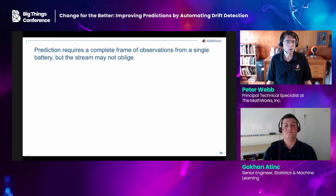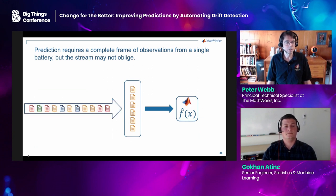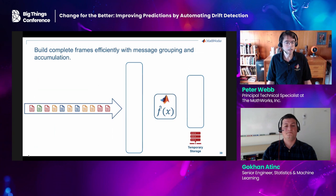Recall what Gokhan told you about feature extraction — it's accurate only if the frame contains a minimum number of messages, all from the same battery. But since multiple buses send data to the stream simultaneously and independently, messages in the stream seldom present themselves in suitable blocks. There are two problems here: not enough data from a single battery to fill up the frame — four in the stream, but the frame needs six — and all the messages are not in a contiguous block.